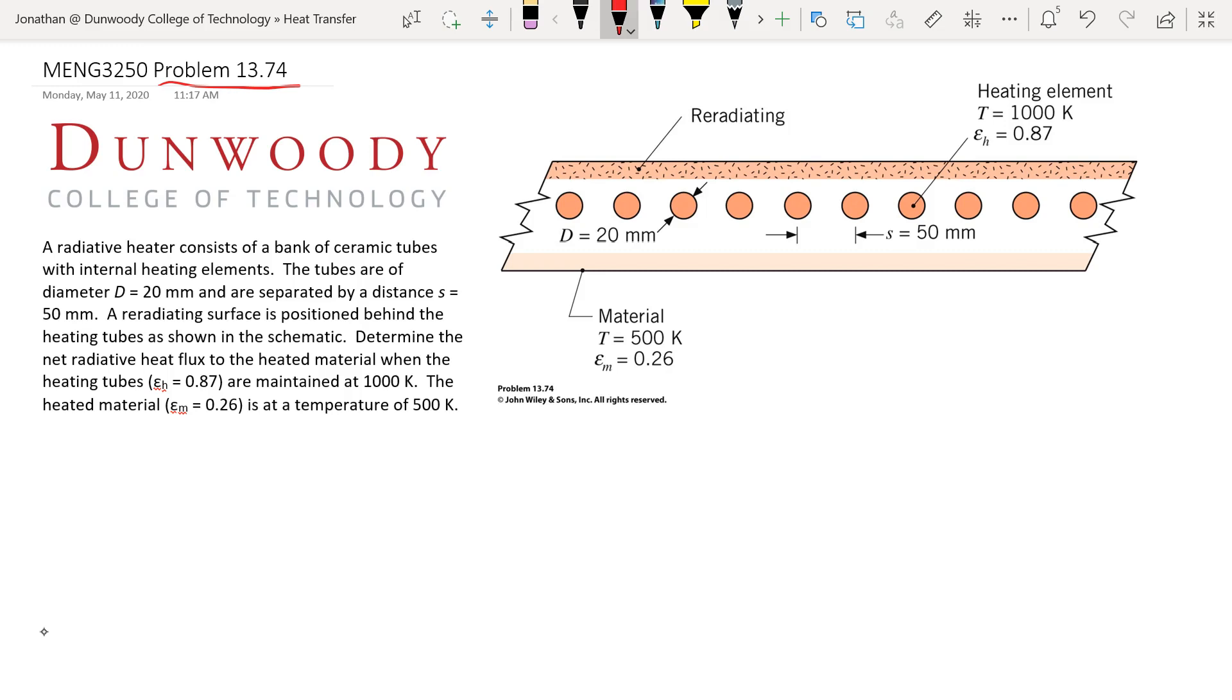We're told that we have a radiative heater that consists of a bank of ceramic tubes with internal heating elements. They have a diameter of 20 millimeters and are separated by center spacing of 50 millimeters. We have a re-radiating surface behind the tubes, shown up here.